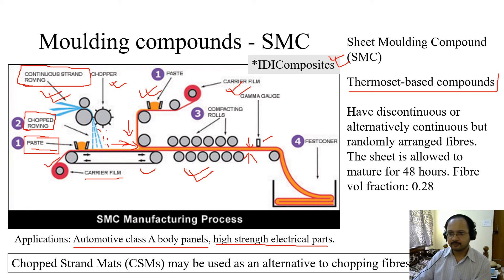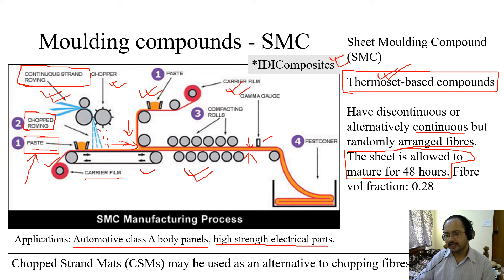These are thermoset based compounds. When we speak about sheet molded compounds, it is thermoset based. You have discontinuous or alternatively continuous but randomly arranged fibers. The sheet is allowed to mature for 48 hours. Remember, you are using a paste, so the paste has to cure itself. That bonding agent is kept for 48 hours to mature. Typically, the fiber volume fraction is 28%, not very high. What is the alternative to chopping fibers? You can use chopped strand mats (CSMs). Rather than gluing it or adding paste, you just use a chopped strand mat.